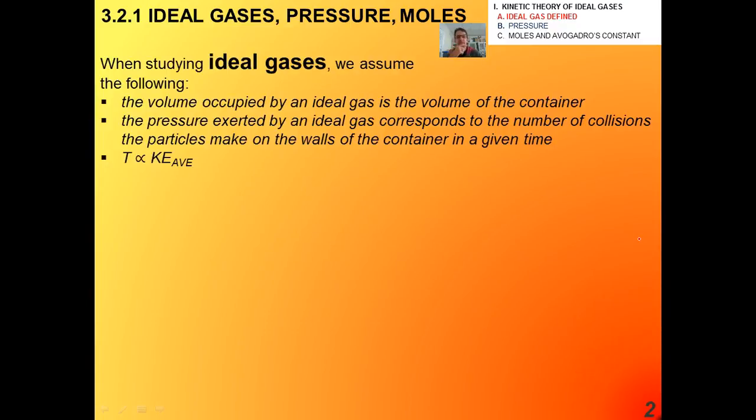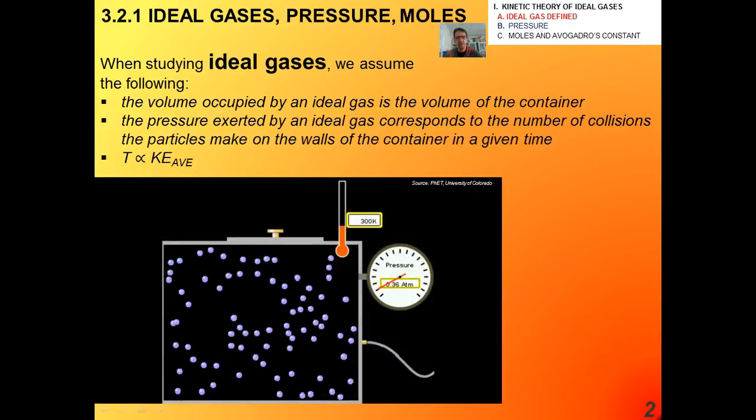Alright. A few other things. When we study ideal gases, we also assume that the volume occupied by an ideal gas is the same as the volume of the container. It's a pretty reasonable assumption. There's no reason to think why one corner of a box that contains a gas would be empty and the rest in the other corner would have all the gas molecules bunched up in it. That's just not going to happen. We also assume that the pressure exerted by an ideal gas corresponds to the number of collisions the particles make on the walls of the container in a given time and that the temperature, of course, is proportional to the average kinetic energy.